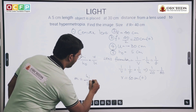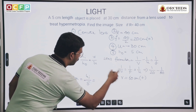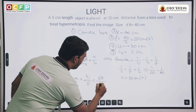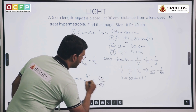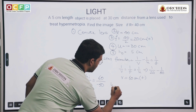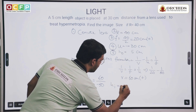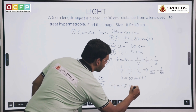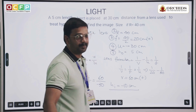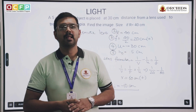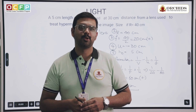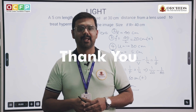Now substituting everything into the magnification formula: HI divided by H naught (5 centimeters) equals v (60 centimeters) divided by u (minus 30 centimeters). Solving for HI, we get minus 10 centimeters — this is your final answer. Hope you have understood the problem. Thank you for watching this video, and I hope you will subscribe to the channel.